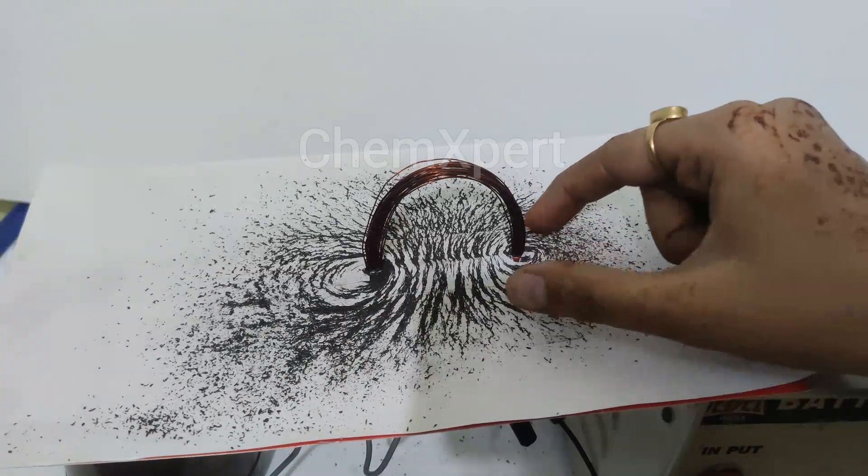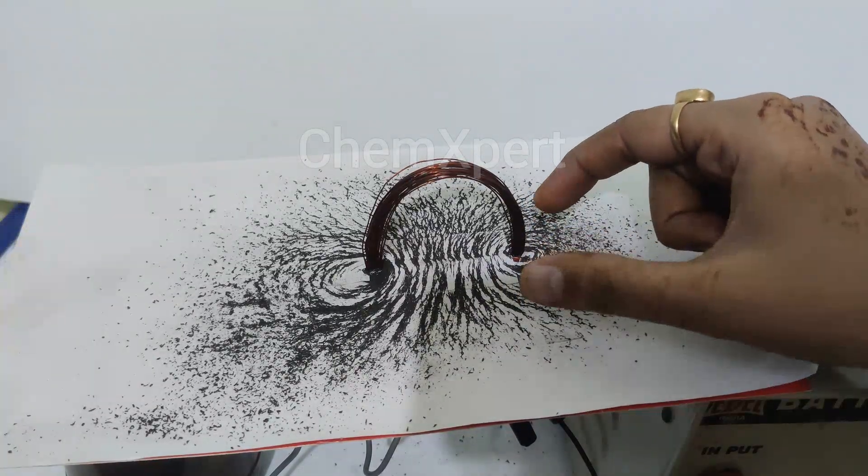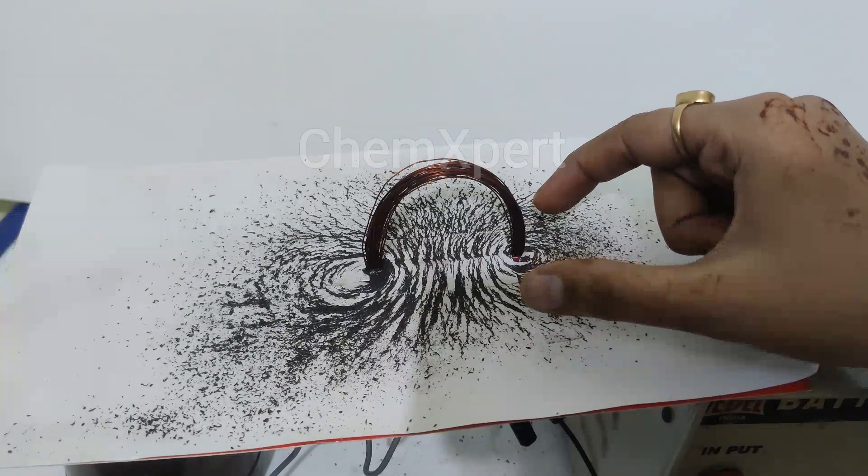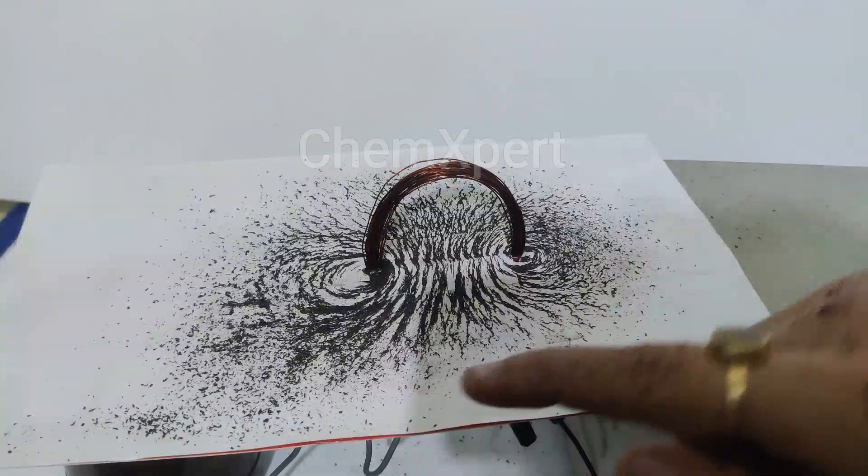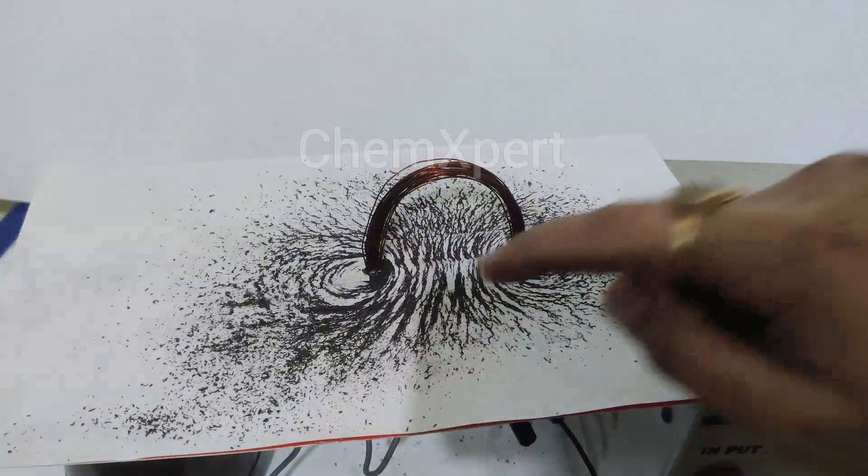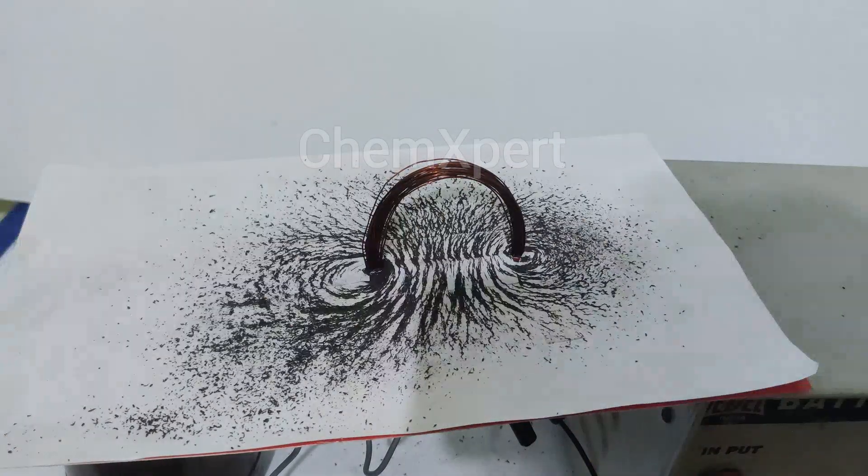But as we move away from the conductor, the closeness will decrease and the circles become wider and wider. You can observe the circles will become wider and wider as we move away from the conductor.